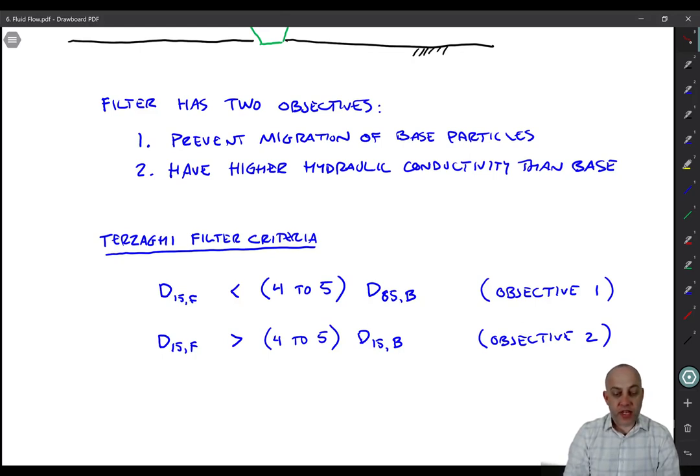So it turns out that for the filter, it's really the finer part that controls the void space size. So we use the D15 size of the filter. And then we want to filter all those particles. We use a fairly coarse size of the base, the D85 size. And that satisfies objective one. That will result in retention of the base particles.